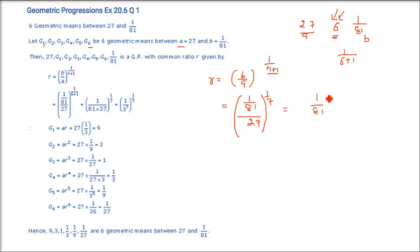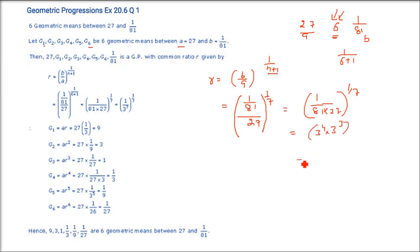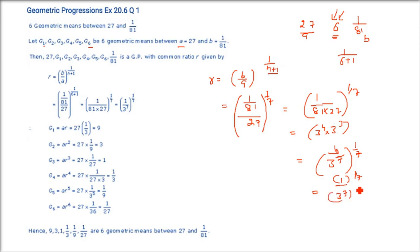So we have 1/(81 × 27) to the power 1/7. Now 81 is 3⁴ and 27 is 3³. When we combine them they become 3⁷. So that will be (1/3⁷)^(1/7). The 7 and 1/7 cancel, giving us 1/3 as the common ratio.